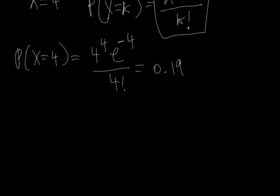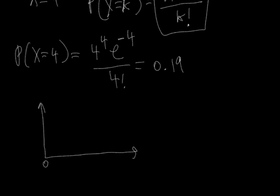If we were to make a plot where the x-axis is the number of events — say 4, 5, 10 — and the y-axis is the probability, we put 0.20 on the y-axis. At 4, we have about 0.19, which is approximately 0.20, so I'll place a dot right there. Let's do this for a few other points.